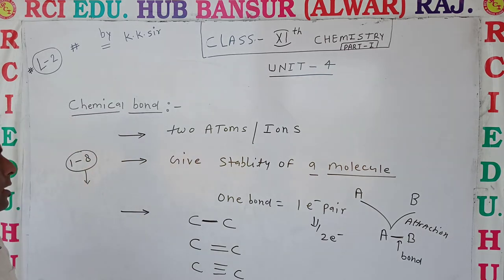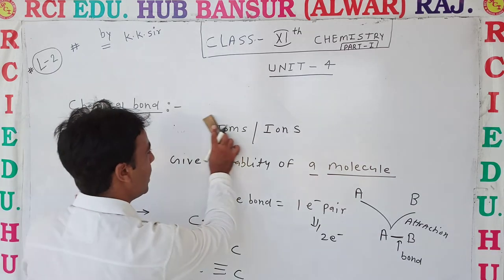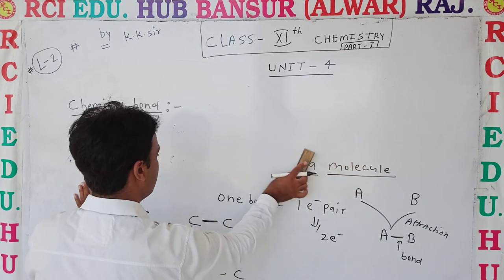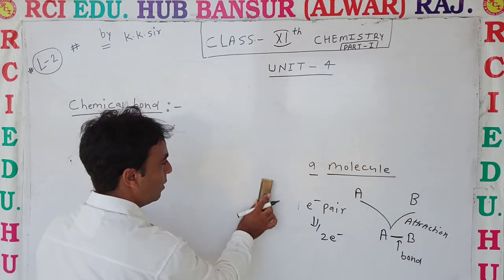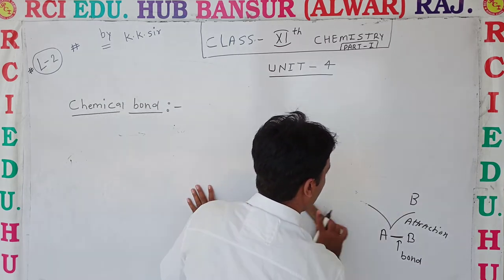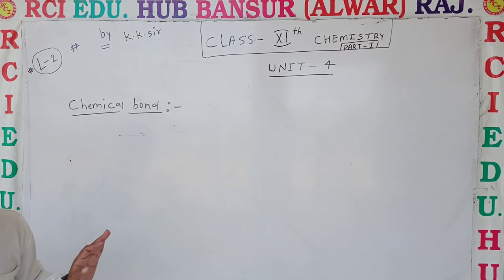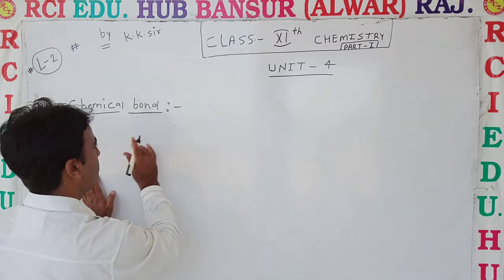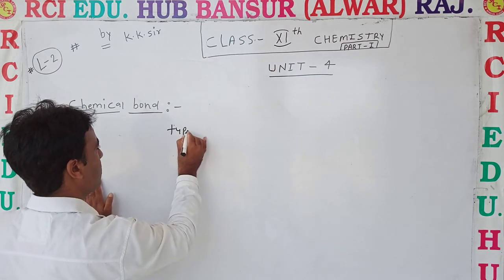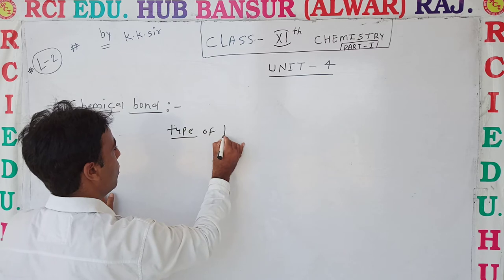The first types of bonds we will see are sigma and pi bonds. So let us look at the types of bonds.